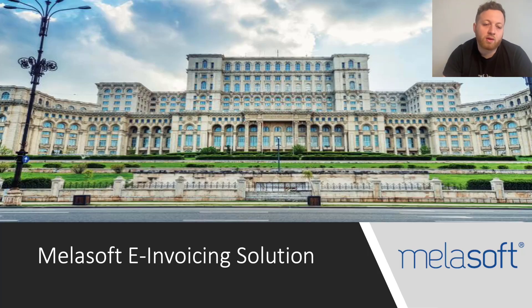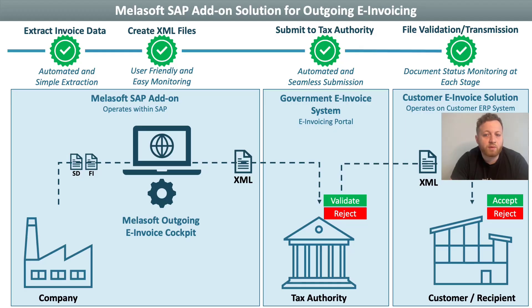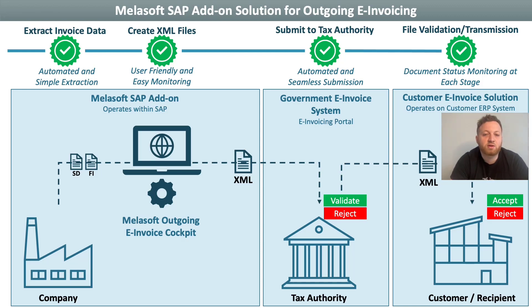We are now on the slide for our Malasoft invoicing solution. The standard Malasoft solution works as a SAP add-on and has four main components: inbound cockpit, outbound cockpit, customizations, and periodic programs. The Malasoft solution simplifies the process — the SAP add-on automatically extracts relevant invoice data, the data is then formatted in XML, and users can monitor the process using the invoice cockpit. Via the Malasoft add-on API, files are then transmitted to the tax authority for validation. If successfully validated, the invoice is forwarded to the partner organization.